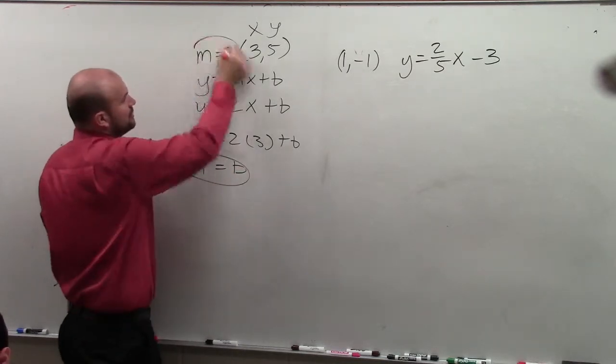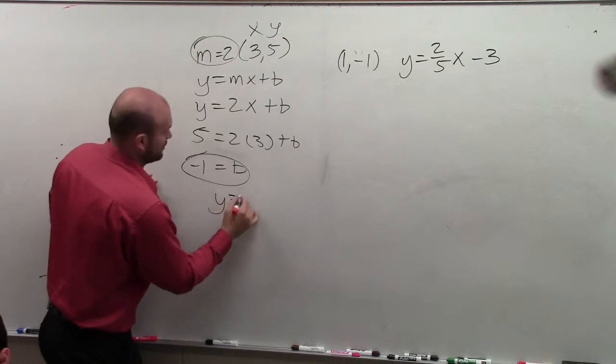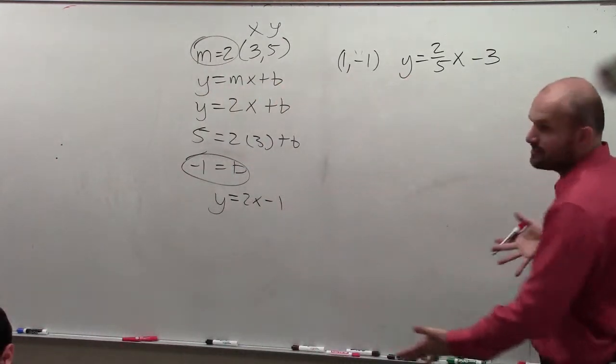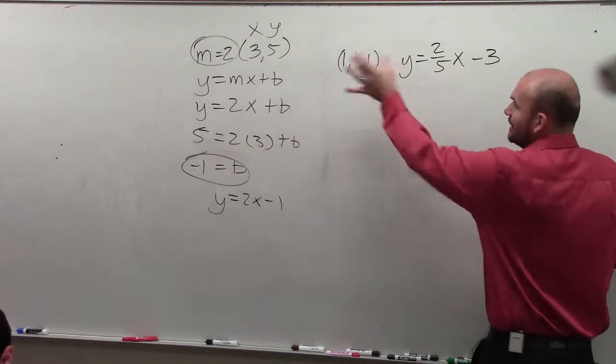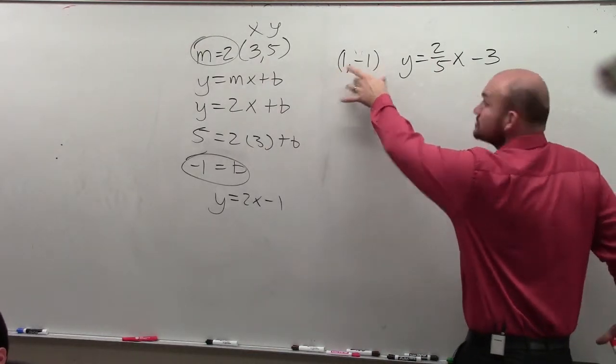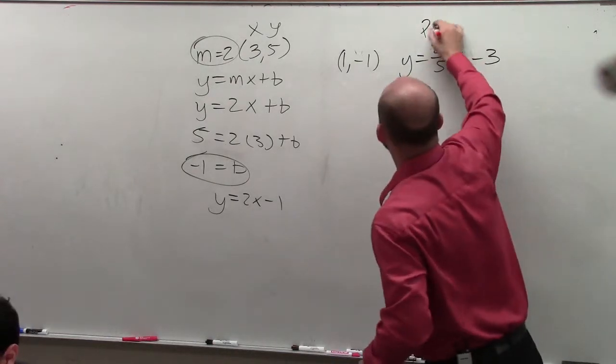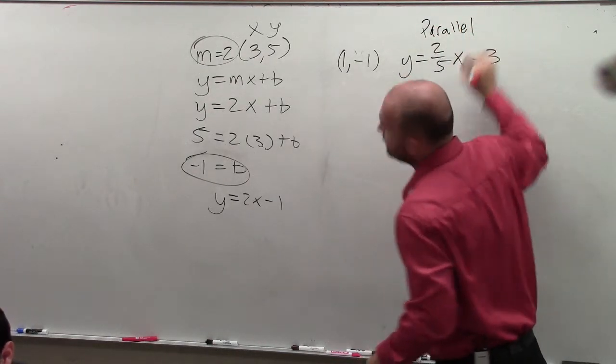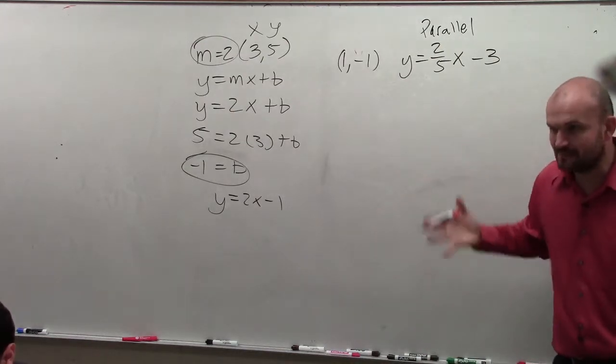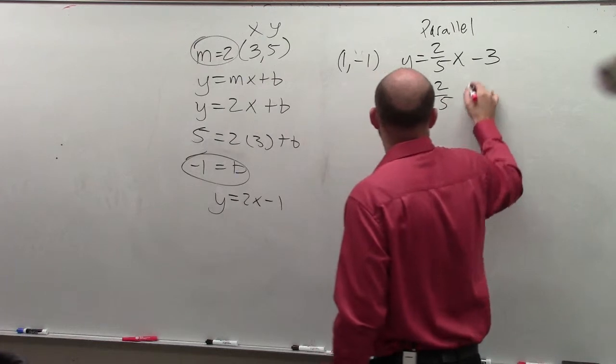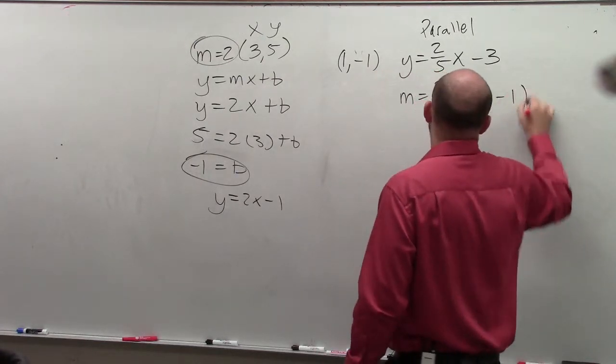Okay, then once you knew what b was, you knew what m was, y equals 2x minus 1, right? So now the only difference with this problem is they're saying, I want this. Here's the point that it has to go through. But rather than telling you the slope, I want it to be parallel to this line. So what you need to know about parallel lines is parallel lines have exactly the same slope. So m equals 2 fifths, and the point it has to go through is 1 comma negative 1.